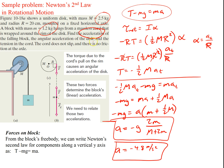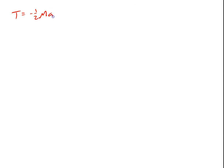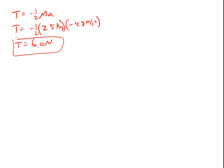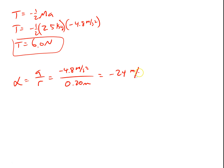We're also asked for the angular acceleration of the disk and the tension. From earlier, tension equals one half capital M times A. Plugging in M equals 2.5 kilograms and A equals 4.8 meters per second squared, we get a tension force of 6.0 newtons. For alpha, it's simply A over R: dividing 4.8 by 0.20 meters gives us negative 24 radians per second squared.